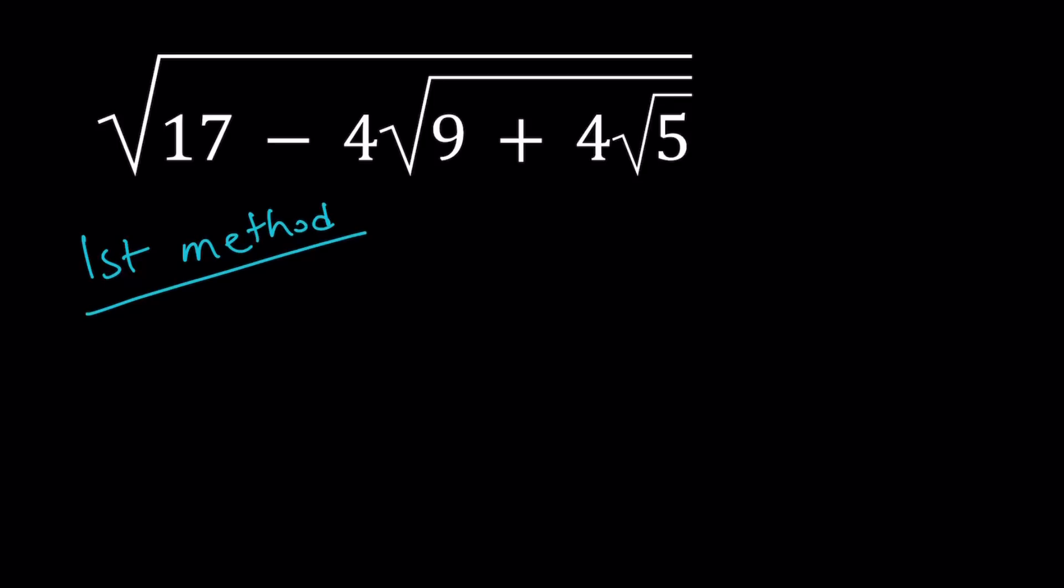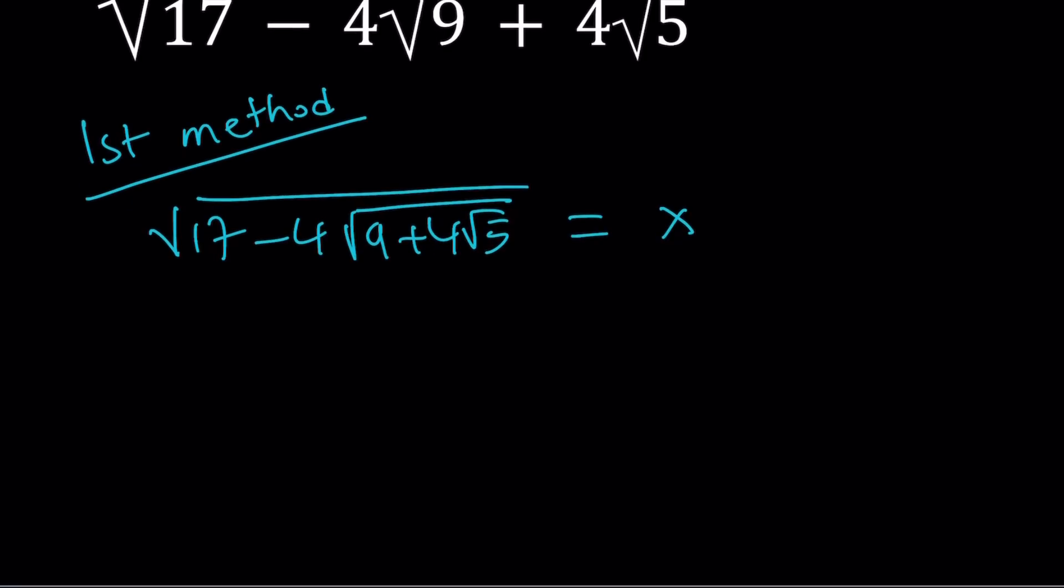For my first method, I'm going to set this equal to x and then square both sides. My goal is to get rid of all the radicals and find an equation in terms of x. First step, I'm going to square both sides.